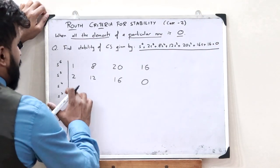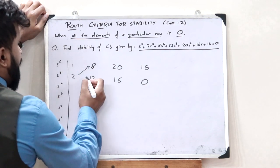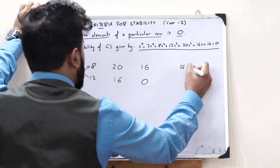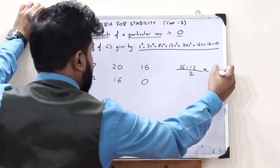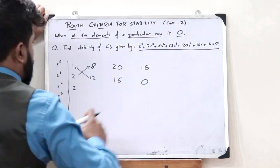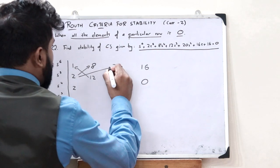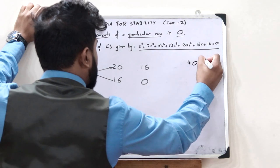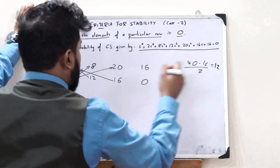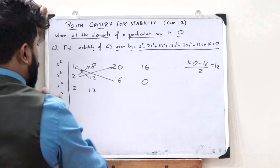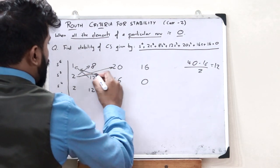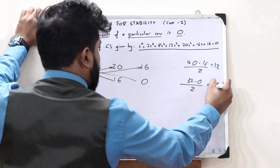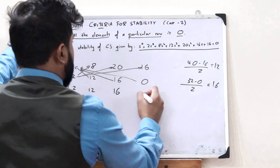To find the s⁴ row elements: (2×8 − 12×1)/2 = (16−12)/2 = 2. Then (2×20 − 16×1)/2 = (40−16)/2 = 12. And finally (2×16 − 0×1)/2 = 32/2 = 16. So the s⁴ row is 2, 12, 16, 0.